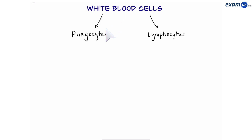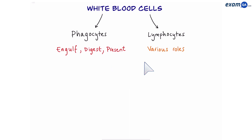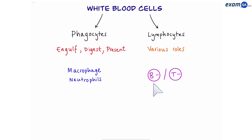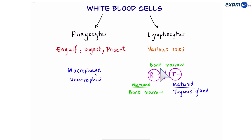There are two main classes: phagocytes and lymphocytes. Phagocytes engulf, digest, and present the antigens on their surface. Lymphocytes have various roles within the body. Examples of phagocytes are macrophages and neutrophils, whereas for lymphocytes we have the B and the T lymphocyte. Now both of them were created in the bone marrow; however, the B lymphocyte matured in the bone marrow, whereas the T lymphocyte went to the thymus gland. So the B stands for bone marrow and the T stands for thymus.